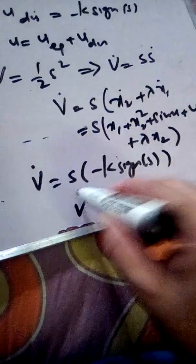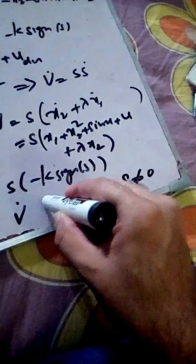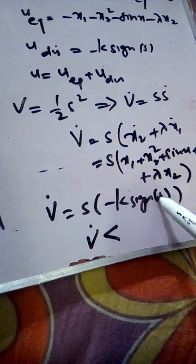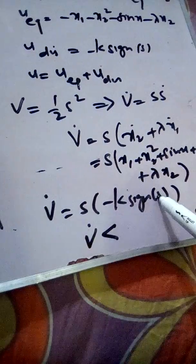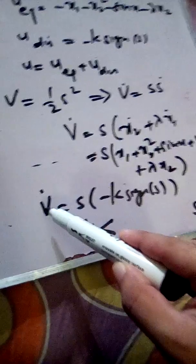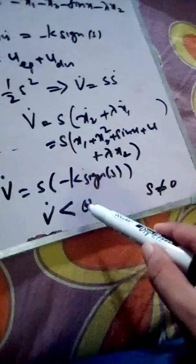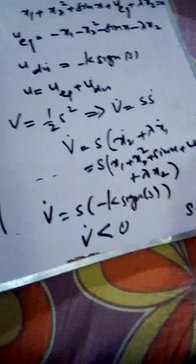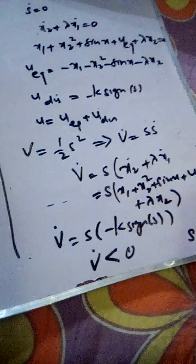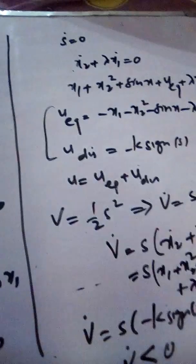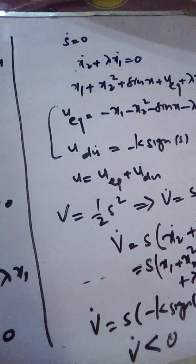Now, for s not equal to zero, this expression is negative definite. When s is negative, sign(s) is negative, and the minus sign makes the product positive — but multiplied by the negative s, the result is negative. When s is positive, sign(s) is positive, and the minus sign makes it negative, so V_dot is again negative. Therefore, when s is not equal to zero, the derivative is negative definite, meaning trajectories move towards the sliding surface. Once on the sliding surface, they move towards the origin, confirming that this control law drives x1 and x2 to zero.